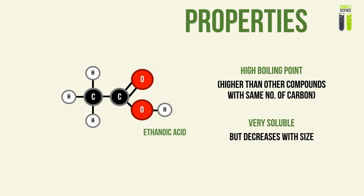Let's look at the physical properties of this type of organic molecule. It has a high boiling point, higher than most other compounds with the same number of carbons. This is generally due to hydrogen bonding, which you will learn later at A-level, and is responsible for keeping these molecules together. In addition, they are also very soluble, also due to hydrogen bonding, specifically in water. However, this solubility does decrease with size — that is, with carbon chain length or molecular mass.